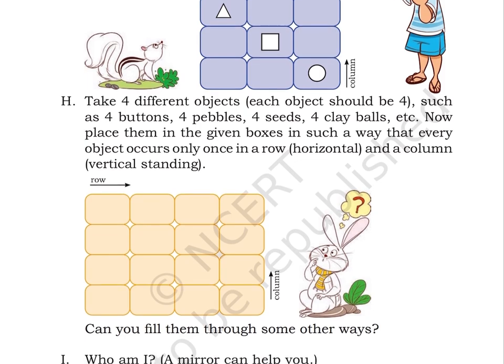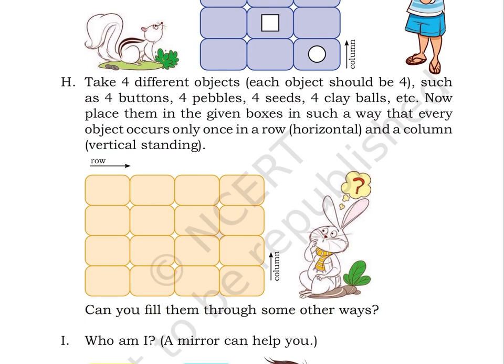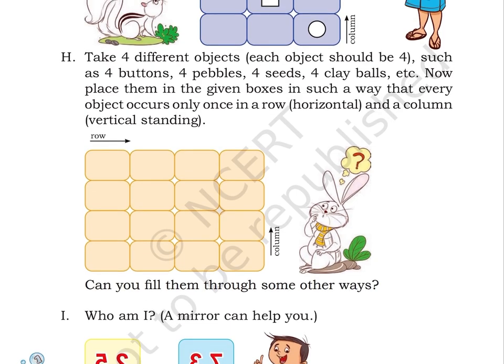Puzzle H: Take 4 different objects. Each object should be 4, such as 4 buttons, 4 pebbles, 4 seeds, 4 clay balls, etc. Now, place them in the given boxes in such a way that every object occurs only once in a row, horizontal, and a column, vertical standing. Here are 16 boxes given horizontally and vertically. You have to put all the objects mentioned above inside the boxes.